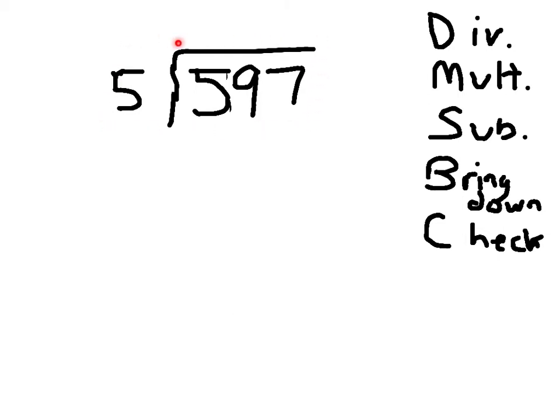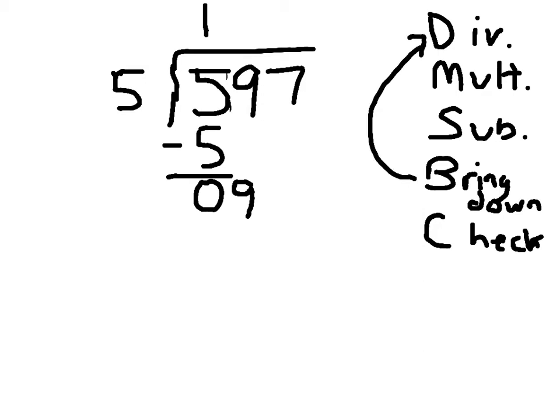Go ahead and write this problem down on your paper. First we start with the hundreds place: 5 hundreds divided into 5 parts gives us 1. 1 times 5 is 5, and 5 minus 5 is 0. After subtracting, we bring down the 9 and go back to the divide step again — bring down one number at a time. Hit pause, finish up your problem, and I'll come right back to you.